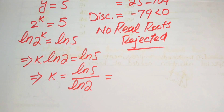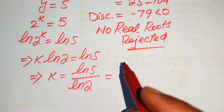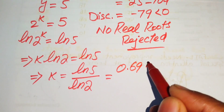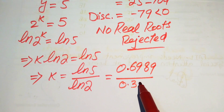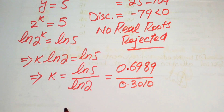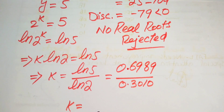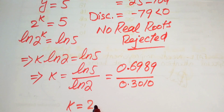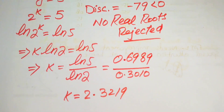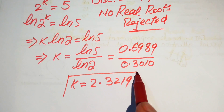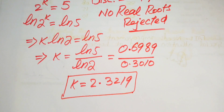Using a calculator or log table, the value of log 5 is 0.6989 and the value of log 2 is 0.3010. Dividing these values, we obtain k equals 2.3219. The value of k is clearly a real number, so this is the final answer. Thank you so much for watching this video — please subscribe to my channel for more exciting videos.